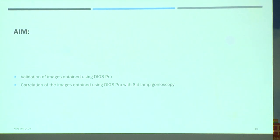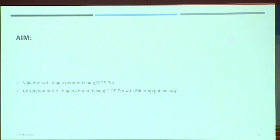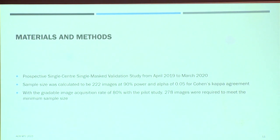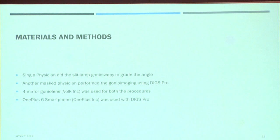The aim of the current study is to validate the images obtained using DixPro by correlating them with the gold-standard slit lamp gonioscopy. It was a prospective, single-centre, single-mask validation study conducted from April 2019 to March 2020. Sample size was calculated to be 222 images based on the previous pilot study, and with a gradable image acquisition of 80%, we required 278 images. A single physician did the slit lamp gonioscopy to grade the angle, while another masked physician performed gonio imaging using DixPro. A four-mirror gonio lens was used for both procedures, and a OnePlus 6 smartphone was used for obtaining the images.